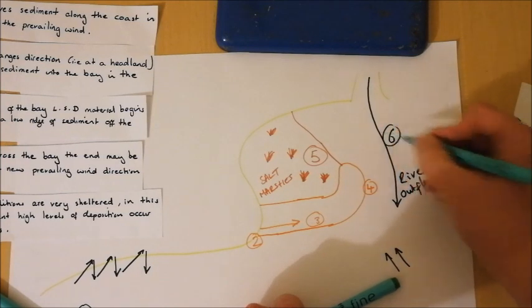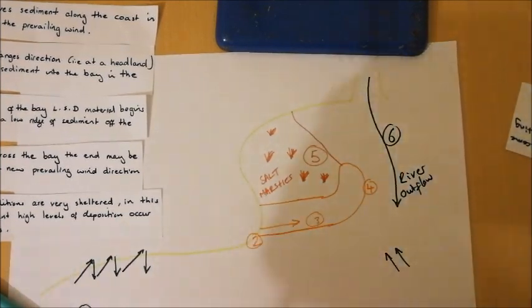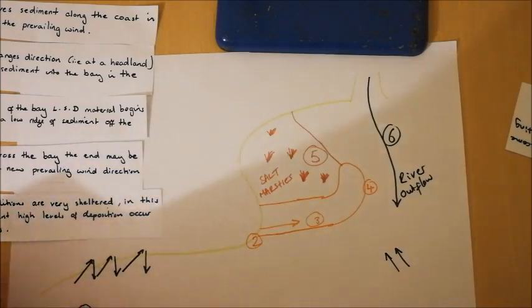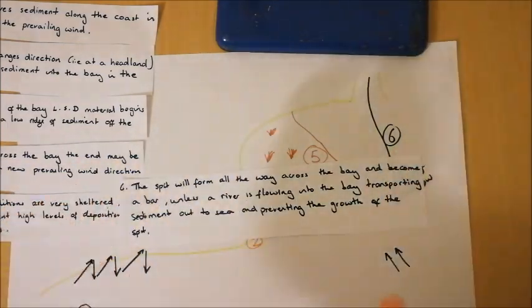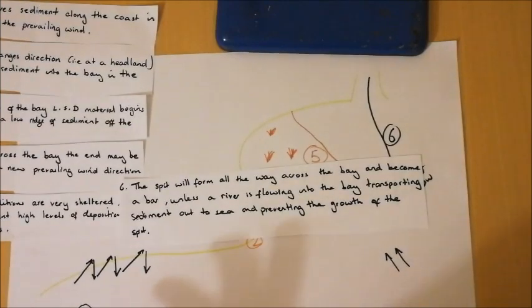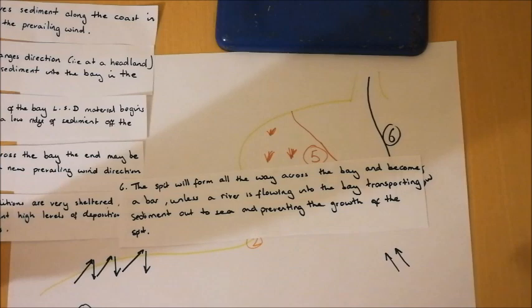So again, we can put number six there. And again, we can have an annotation numbered to show the sequence. So the spit will form all the way across the bay and become a bar unless a river is flowing out into the bay, transporting sediment out to sea and preventing the growth of the spit.